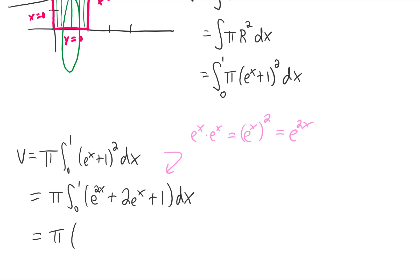The integral of e to the 2x turns out to be 1 half e to the 2x. Technically, what happened with this piece of the integral is we did a u equals 2x substitution. That gave us du is 2dx, and that brought this 1 half down in the integral. Okay, next term. Integrating 2e to the x is just 2e to the x. Integrating 1 just gives us x. And we can evaluate that from 0 to 1.